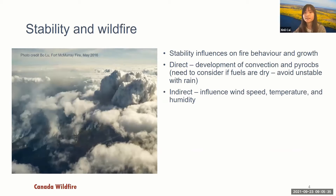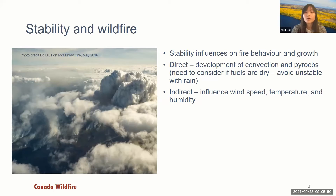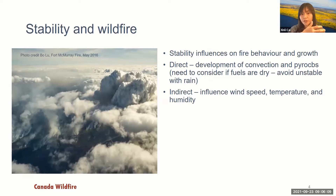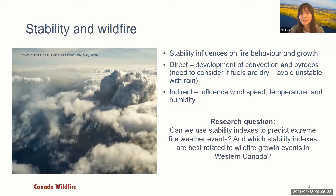Atmospheric stability has both a direct and indirect influence on fire behavior and fire growth. For example, an unstable air mass can develop convective columns and sometimes generate pyro-CBs, directly impacting fire growth and behavior. However, we also need to consider whether fuels are dry, because convective activity can result in showers and rain. Stability also has an indirect influence on fire by affecting wind speed, temperature, and humidity at the earth's surface.